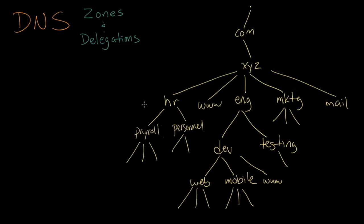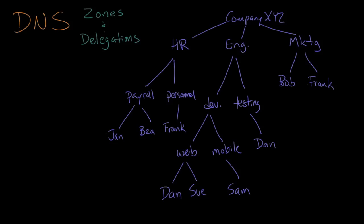I want to show you zones and delegations with this picture here, but first we're going to show you something a little more familiar, which looks kind of like an organization chart for this company. What we've got is a company called XYZ. It's divided up into three divisions: human resources, engineering, and marketing. Marketing is pretty small — it's just got a couple of people working for it.